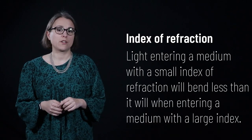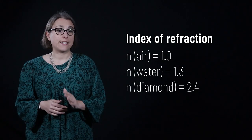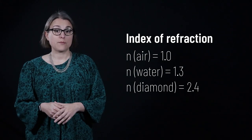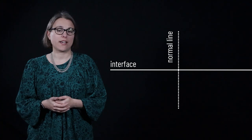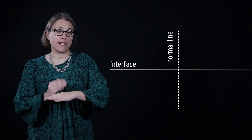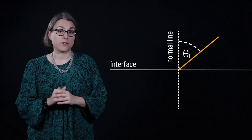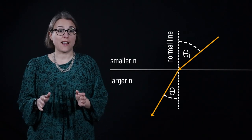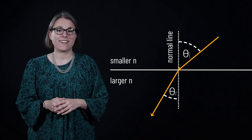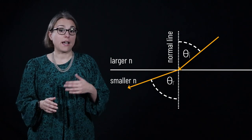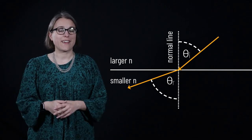The index of refraction indicates how much light will bend when entering a medium from free space. Something with a low index of refraction will bend light much less than something with a high index. For context, water has an index of refraction of 1.3, and diamond has a relatively high index of refraction of 2.4. To quantify the bending of light, we look at the normal line drawn at 90 degrees to the medium. Light enters at an angle of incidence measured with respect to the normal line. When light goes from a lower to higher index of refraction, such as air to glass, the angle of refraction will be smaller than the angle of incidence. When going from a higher to a lower index, such as water to air, the angle of refraction will be larger.